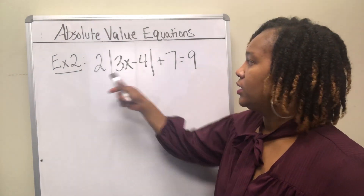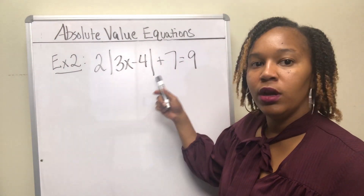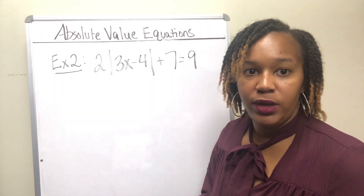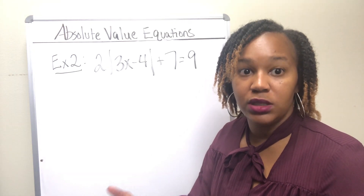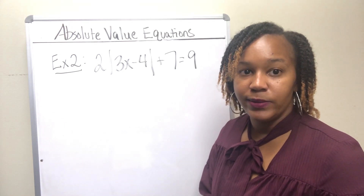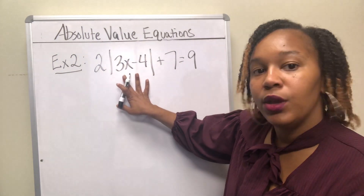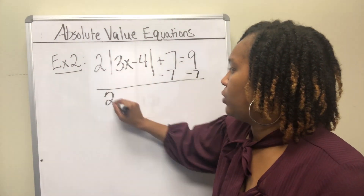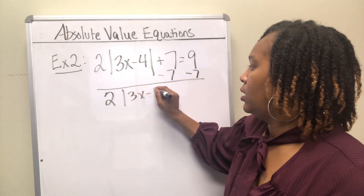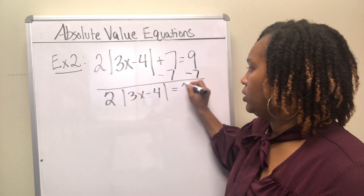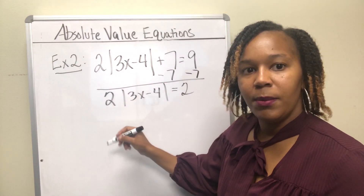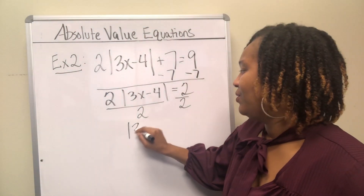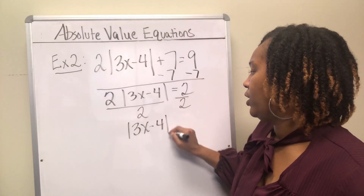For example 2, we're going to solve 2 times the absolute value of 3x minus 4 plus 7 equal to 9. Before applying the positive-and-negative split, we have to first isolate the absolute value — get it on one side by itself. Subtract 7 from both sides to get 2 times the absolute value of 3x minus 4 equal to 2. Then divide both sides by 2 to get the absolute value of 3x minus 4 equal to 1.